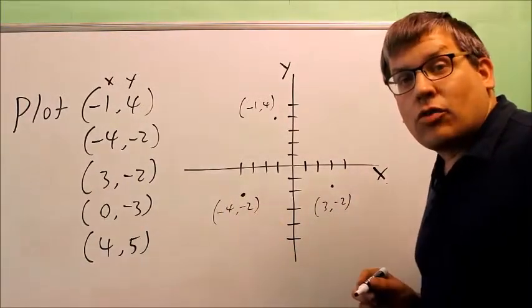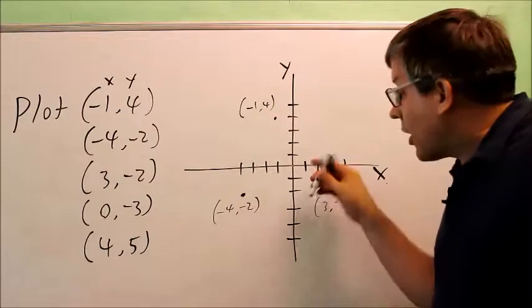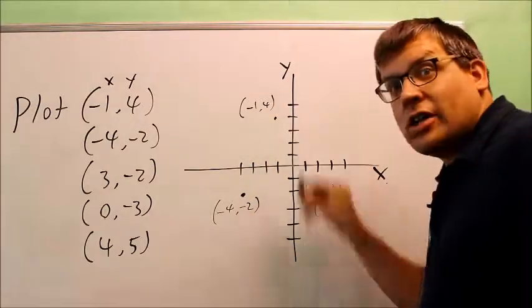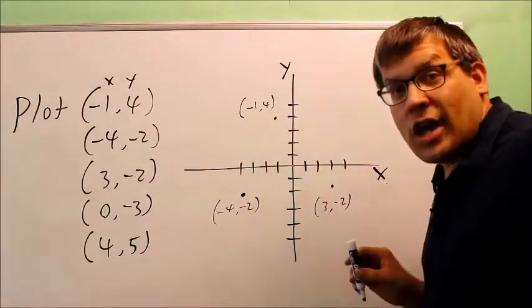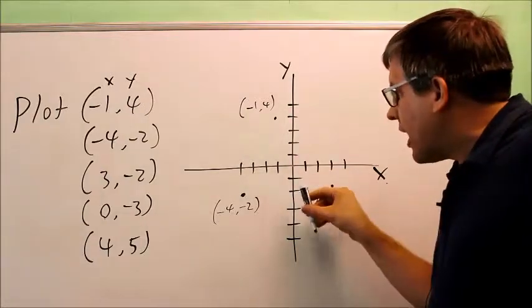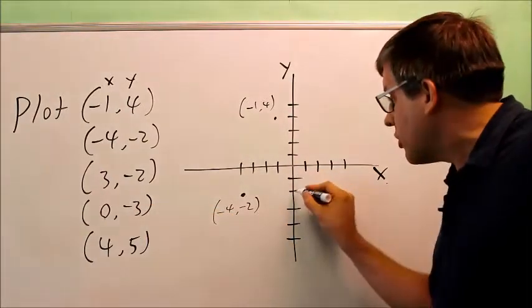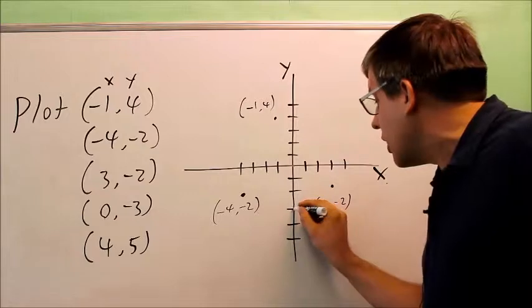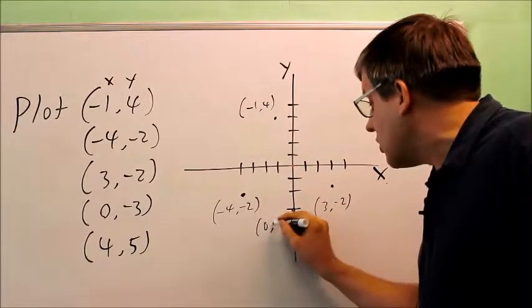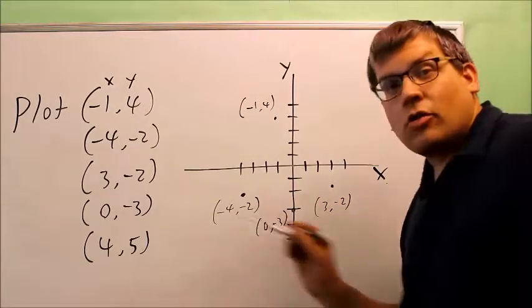The next one is zero, negative three. Because the X value is zero, I'm not going to move left or right — I stay directly on the Y axis. From there, I just go down three units: one, two, three. Right here is zero, negative three.